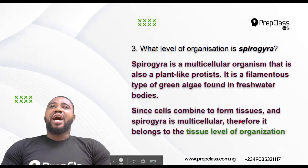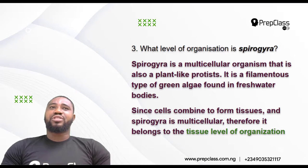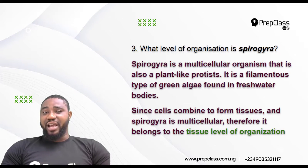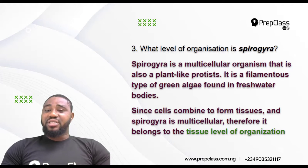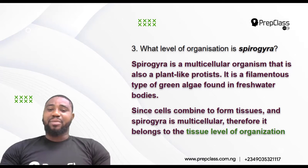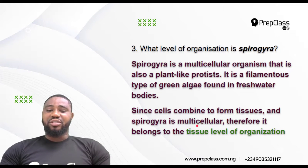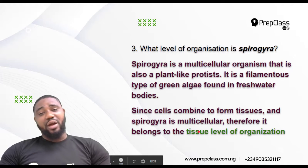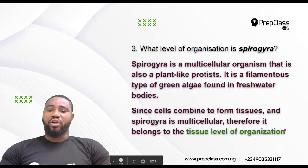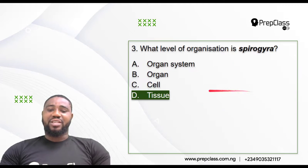Now if spirogyra were like a single cell — like a single unicellular organism like Euglena — you could say it belongs to the cell level of organization. But since spirogyra is a multicellular organism — many cells — and cell plus cell gives tissues, that means spirogyra belongs to the tissue level of organization. So the correct answer is the tissue level of organization.